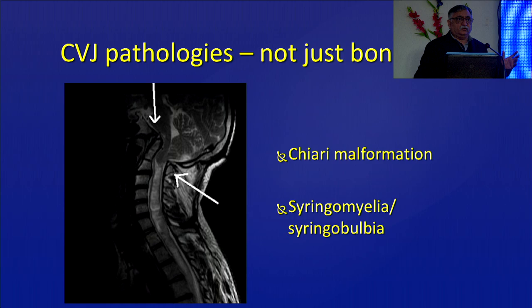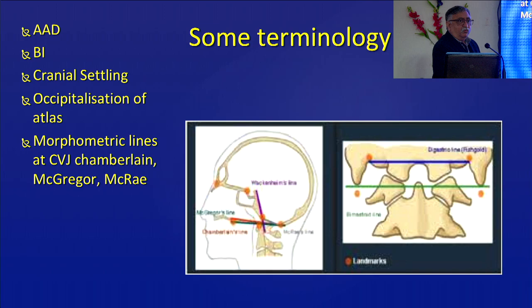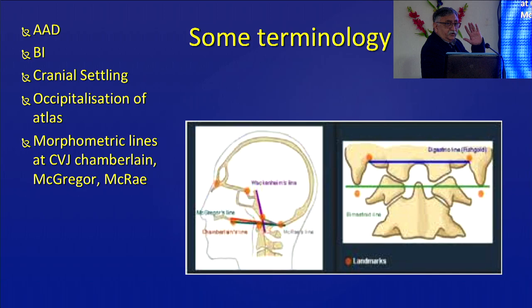All this together can make up a CV junction problem, and once you start to address it, you have to address all these problems. Before we begin, some basic terminology which you must know and remember: What is atlantoaxial dislocation? What is basilar invagination? What is cranial settling or secondary basilar invagination? What is occipitalization of atlas? And what are these lines — most importantly, the McGregor and the McRae lines, which were the earliest.